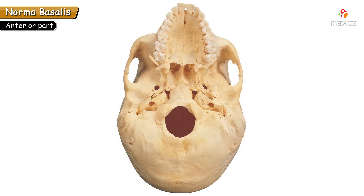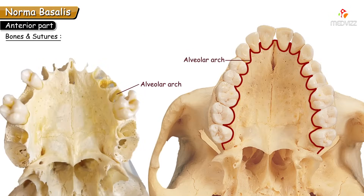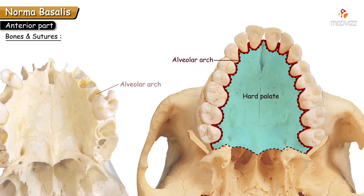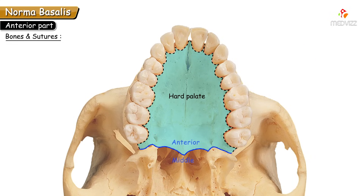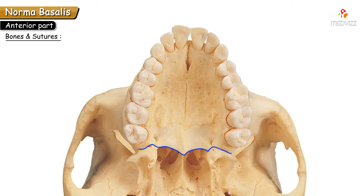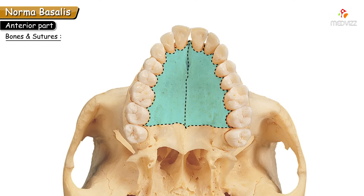The anterior part of norma basalis is formed by the alveolar arch, which possesses bony sockets for teeth of the upper jaw. In the middle it is formed by the hard palate. The posterior border of the hard palate separates the anterior part from the middle part. On the posterior border, there is a projection known as the posterior nasal spine.